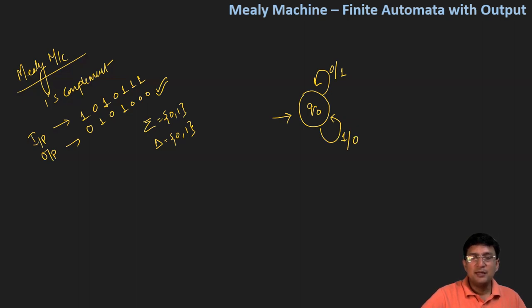So this is actually the Mealy machine for the given input. If I process this, you can see that, let's say I take a very small one, let's say 1011.